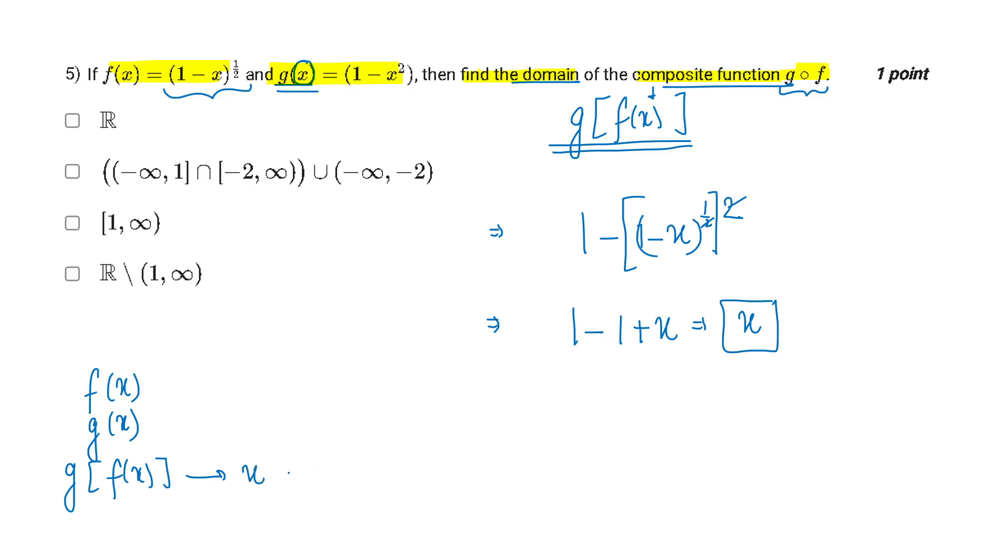So g of f(x) mera x hai, to iska jo domain hai that is R. Mera jo g(x) hai, that is 1 minus x square. Yahaan pe bhi koi limitations nahi hai, it belongs to R. But when I am talking about f(x), that is 1 minus x ka under root. And we already know ki under root ke andar se wohi positive value allowed hai.